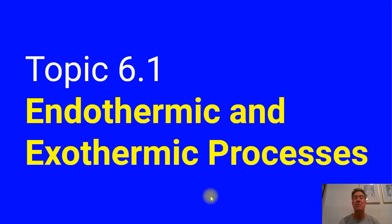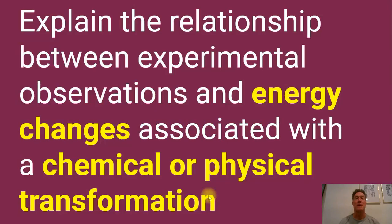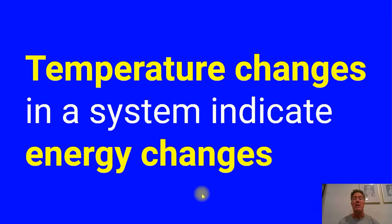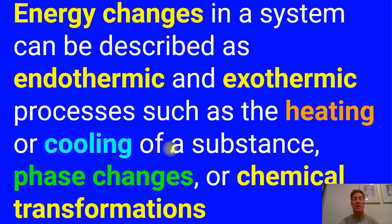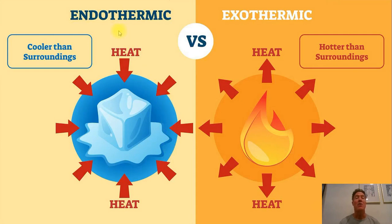The first thing to grasp is the difference between endothermic and exothermic processes. Temperature indicates energy change, and temperature is directly proportional to the average kinetic energy. Energy changes in a system can be described as endothermic, which is taking in energy, or exothermic, energy exiting the system, in processes such as heating or cooling, phase changes, or chemical transformations. In endothermic processes, heat comes into a system — for example, this ice cube — from the surroundings.